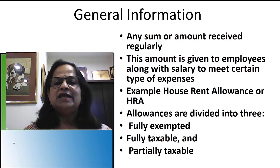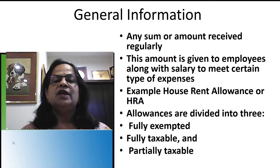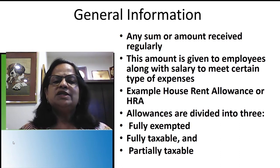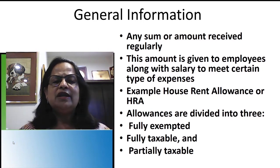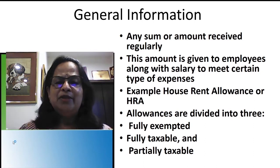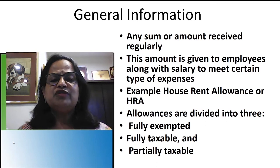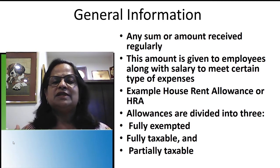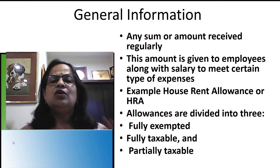Allowances are amounts given to employees along with salary to meet certain types of expenses. House rent allowance, for instance, is included in salary to help employees pay rent when moving to a city for work. Uniform allowance is given to employees who must wear a uniform, such as in the police department. The taxability of each allowance is what we are going to learn in this module.